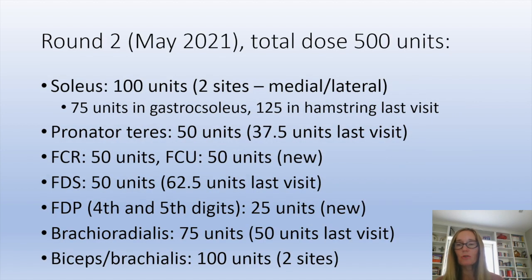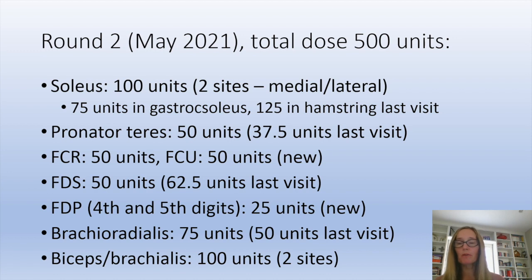In May we changed the dose, going up to 500 units total. Instead of doing the hamstring and gastroc, I skipped those and did only 100 units in the soleus — 50 on the medial and 50 on the lateral aspect. I bumped up the pronator teres and added the flexor carpi ulnaris in addition to the flexor carpi radialis, both getting 50 units. The flexor digitorum superficialis went down a little but I added some into the flexor digitorum profundus on the fourth and fifth digits — 75 units total in the finger flexors. The brachioradialis went up to 75 units, and I added biceps and brachialis at 100 units — 50 units at two sites each.